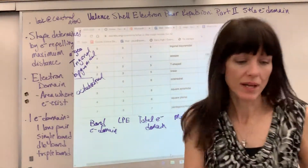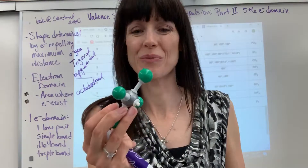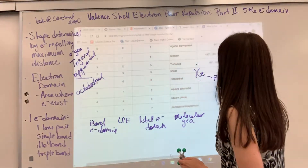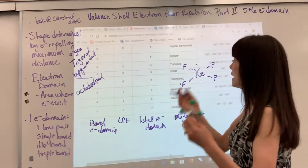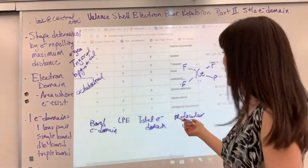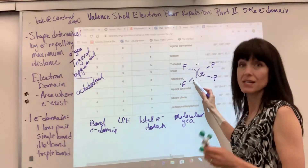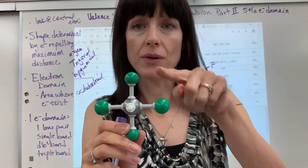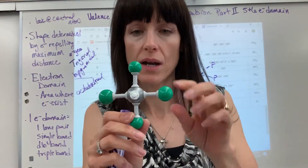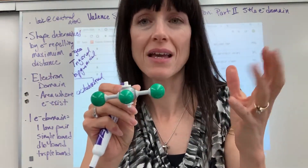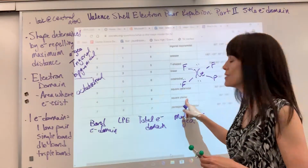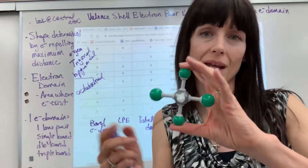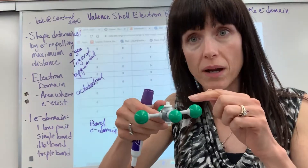The last shape is when we have two lone pairs on six electron domains. The example is xenon tetrafluoride, XeF₄. Xenon has two lone pairs and four fluorine atoms. Counting electron domains: one, two, three, four, five, six. The electron geometry is octahedral. But the shape we see — connecting the four fluorines — forms a square on one plane. Since we can't see the two lone pairs, this is called square planar. The angles between every atom are 90 degrees, and top to bottom is 180 degrees.